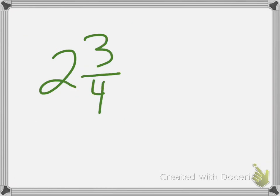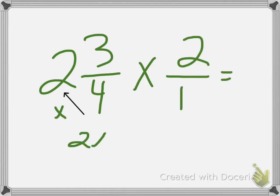So the first thing we have to do is take that 2 and 3 fourths cups of flour and multiply it by 2. And that 2 over 1, we need 2 to be a fraction, so we put 2 over 1.